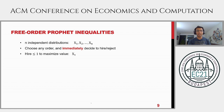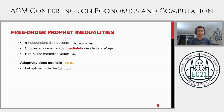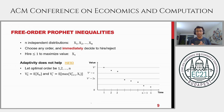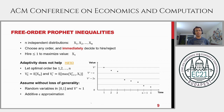Now let me give a high-level idea of how we solve the free-order prophet problem. You have n random variables, and the algorithm must choose an order and hire at most one candidate irrevocably. Since adaptivity doesn't help, we can assume the optimal solution is a fixed order — say X1, X2, X3, and so on — though of course the algorithm doesn't know this order. Once the order is fixed, the optimal solution is given by the simple dynamic program. We can also assume without loss of generality that all random variables are bounded between 0 and 1, and we're content with an additive epsilon approximation.